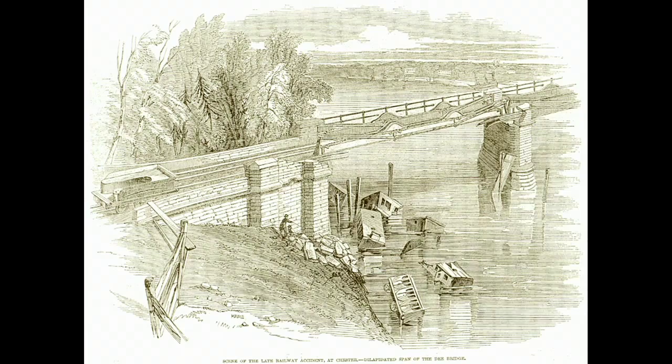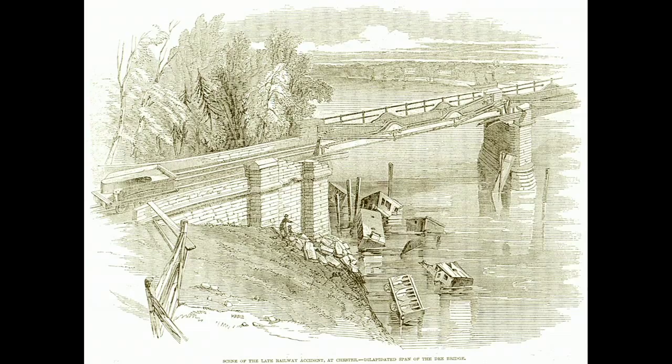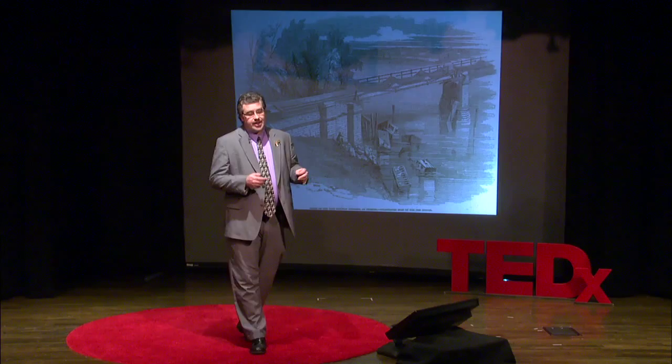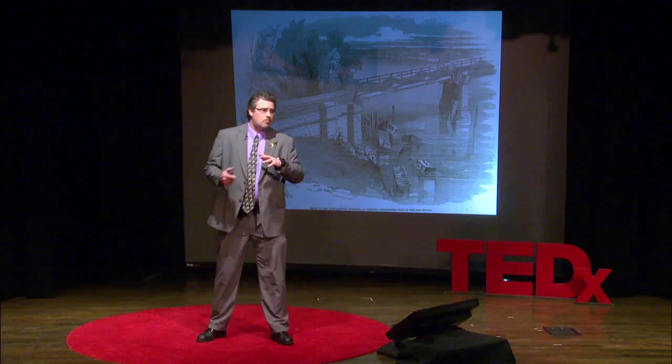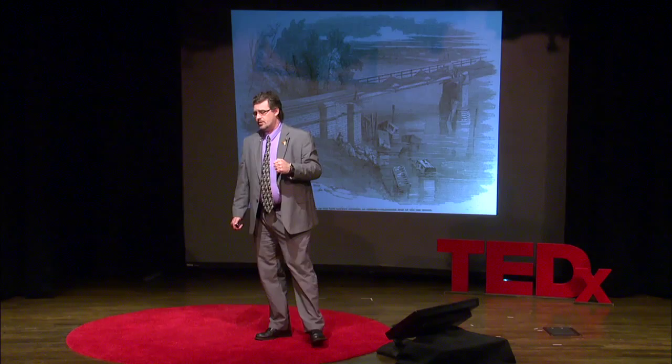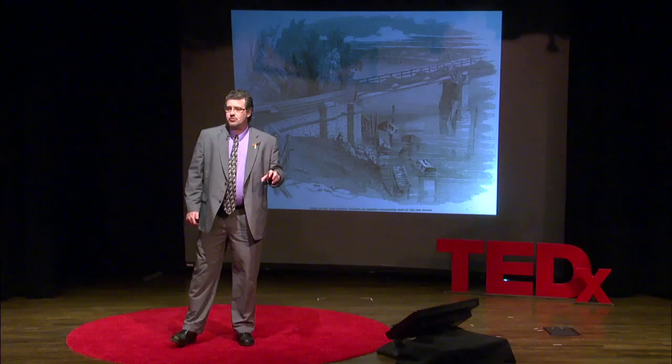In 1847, a bridge that Brunel had constructed was ruined when stray embers from a passing locomotive landed on the oak planking and caught the wood on fire, ruining the iron structure. When this bridge was ruined, a contemporary and competitor of Brunel's, Robert Stevenson, heard about it. On his brand new Dee River Bridge, he decided that's not going to happen to his bridge — so he had the oak planks coated with ballast to douse any embers. But the next passenger train that crossed the Dee River Bridge, because of the added weight of the ballast, caused the bridge to collapse. Five people died in that tragedy.